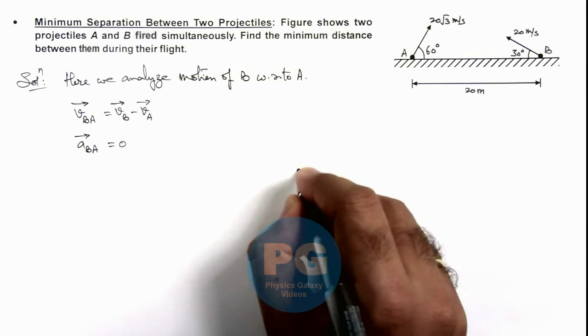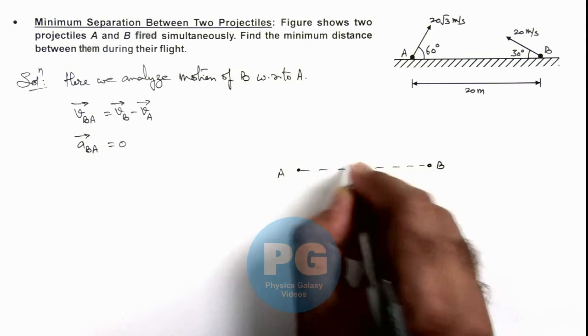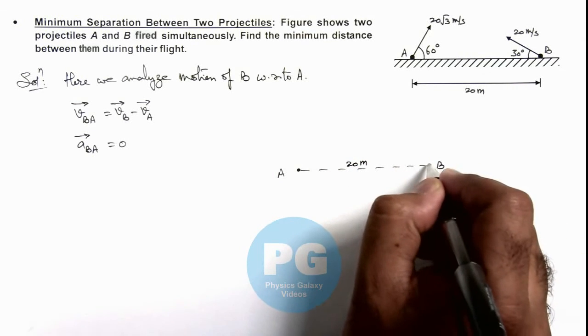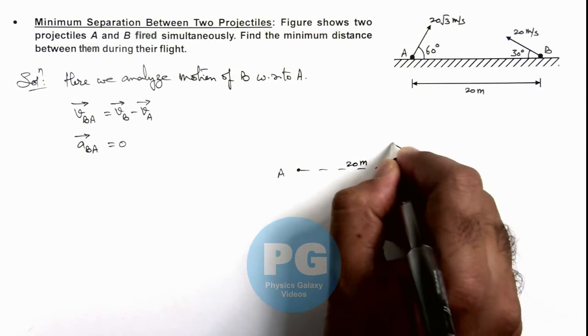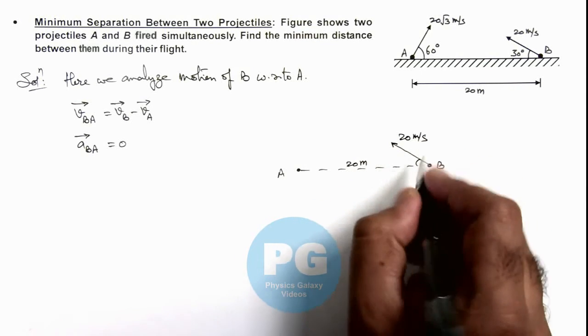If we redraw the situation here, say these are the two particles A and B separated by 20 meters. Here B is thrown with a velocity of 20 meters per second at an angle 30 degrees.